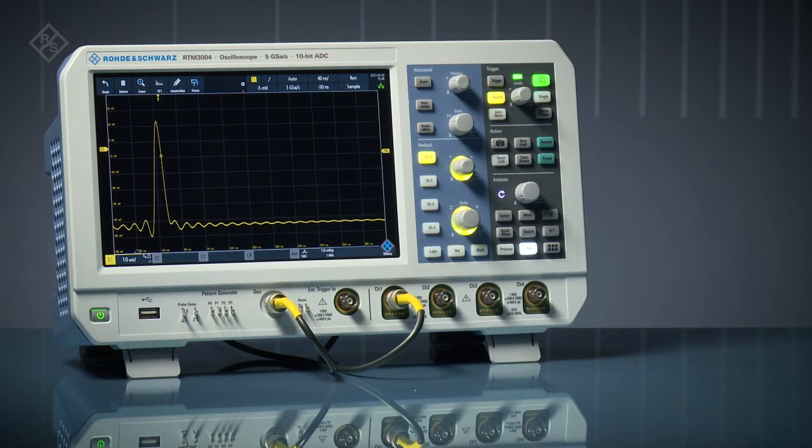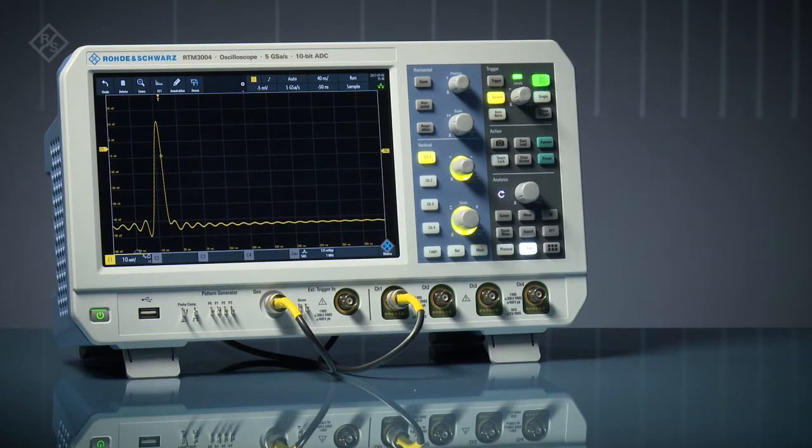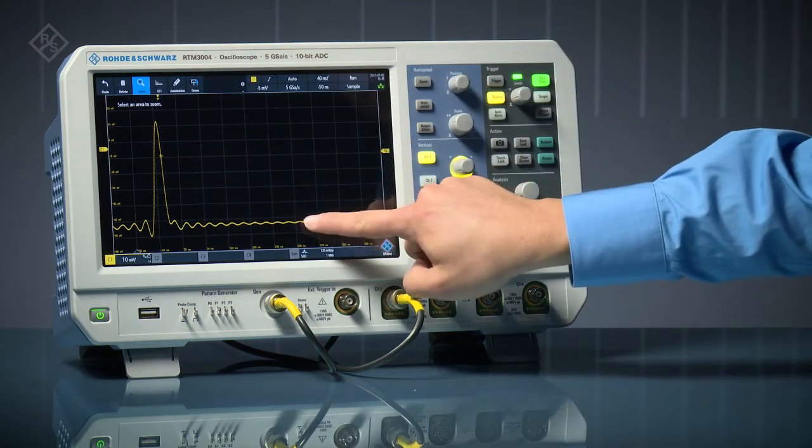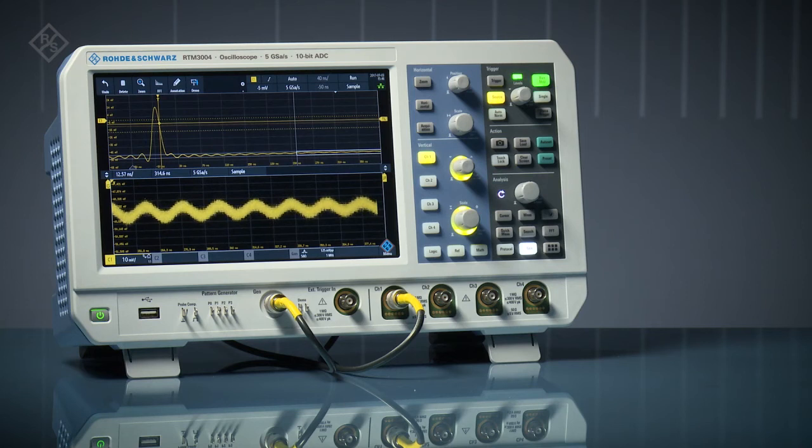Rohde & Schwarz RTM 3000 Series Oscilloscopes feature 10-bit ADCs for increased vertical resolution. 10-bit ADCs have 4 times more vertical resolution than 8-bit ADCs. Let's zoom in on the right side of this waveform using vertical zoom. We can now analyze small signal detail.